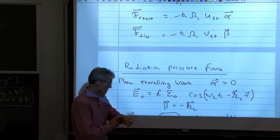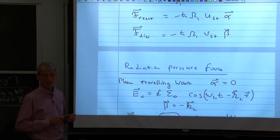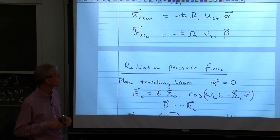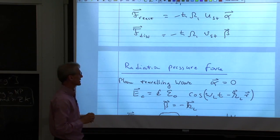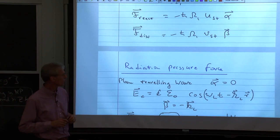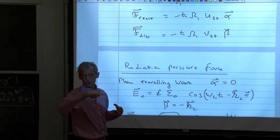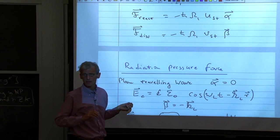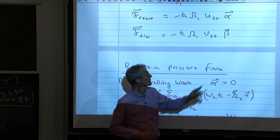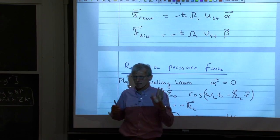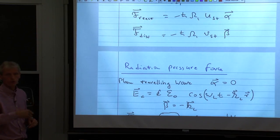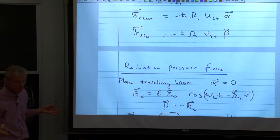We now discuss two simple but characteristic cases. In a plane traveling wave, the amplitude is constant everywhere, so the alpha vector is 0, and only the dissipative force acts. In a pure standing wave, the beta vector is 0, and only the reactive force acts. The traveling wave and standing wave allow us to look at the two forces separately in two physically relevant situations — standing waves are optical lattices, and single traveling waves are used for decelerating atomic beams.